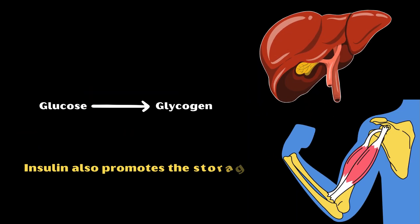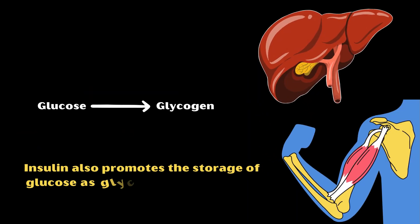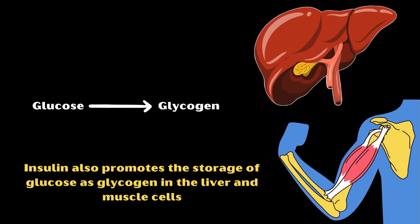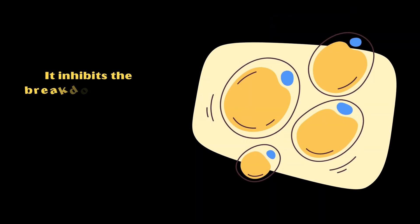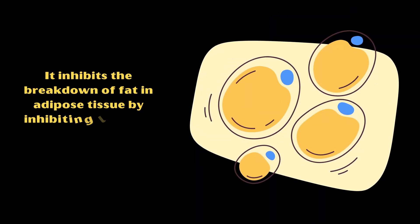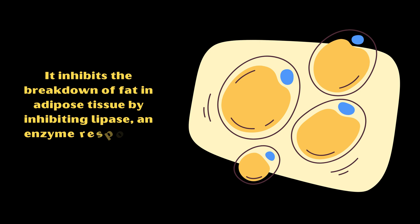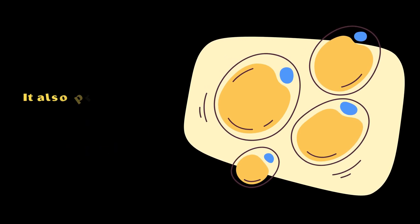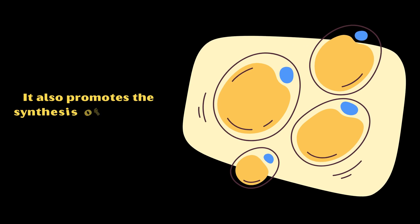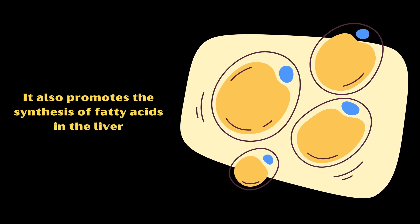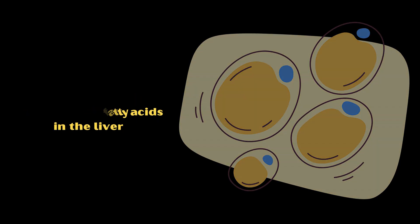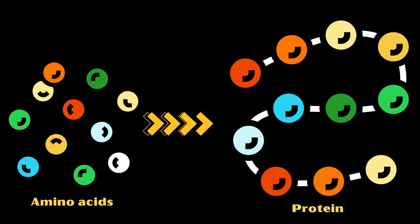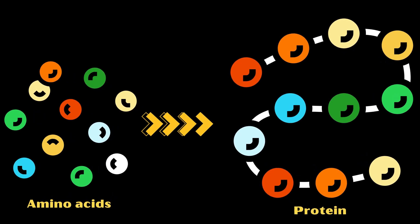Insulin also promotes the storage of glucose as glycogen in the liver and muscle cells. In addition, it inhibits the breakdown of fat in adipose tissue by inhibiting lipase, an enzyme responsible for fat degradation. It also promotes the synthesis of fatty acids in the liver. Moreover, insulin stimulates the uptake of amino acids and promotes protein synthesis in tissues.